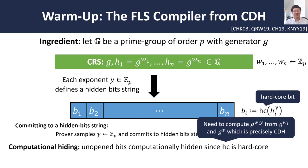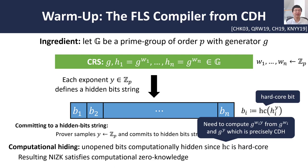On the other hand, if we consider zero knowledge, we notice that because we rely on a hardcore bit, the unopened bits will only be computationally hidden from any efficient verifier, assuming the hardness of the CDH assumption. So here, we need to make a computational assumption to argue that the unopened bits are hidden, and as a result, we only achieve computational zero knowledge. The question is whether we can replace this final component to achieve statistical zero knowledge.